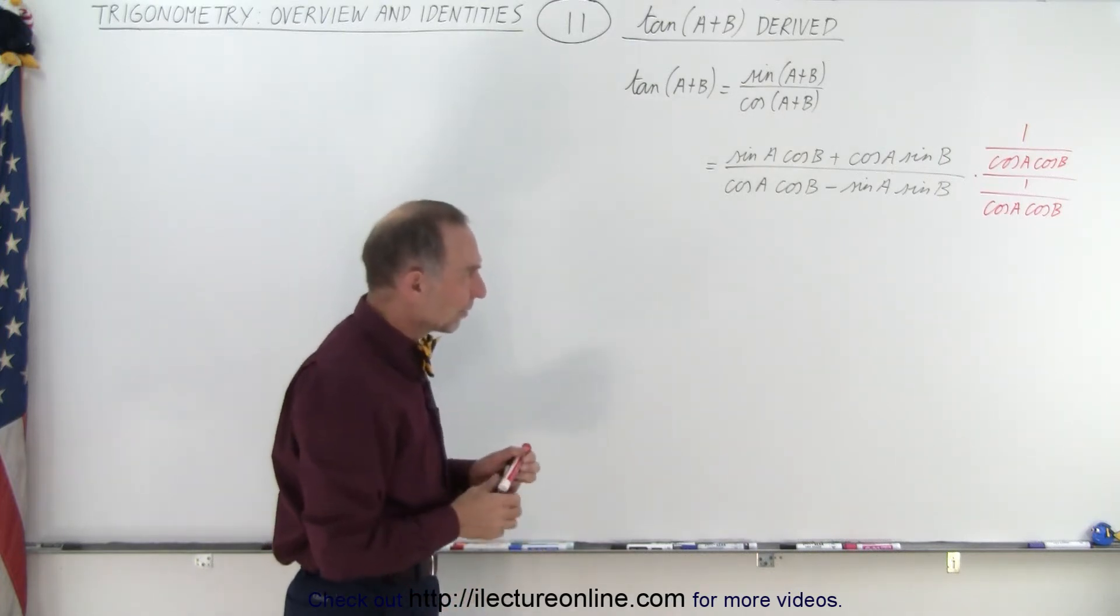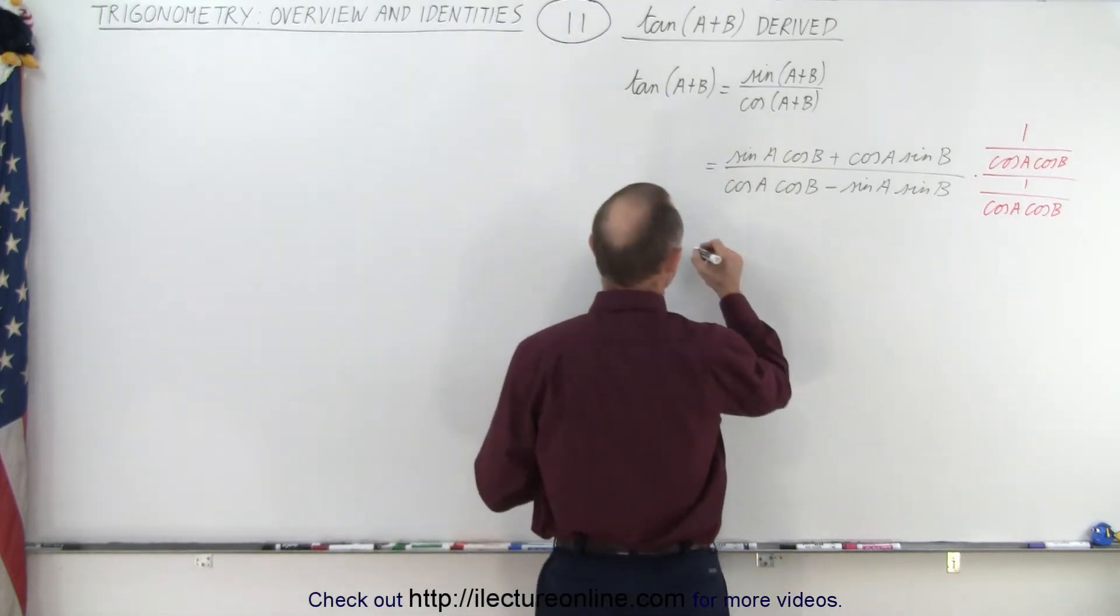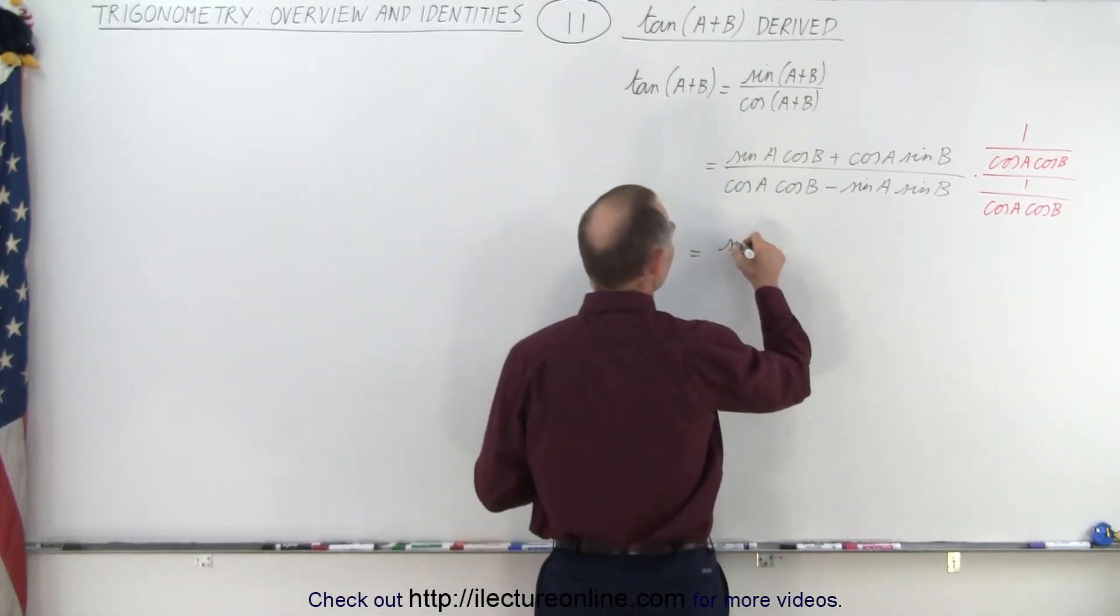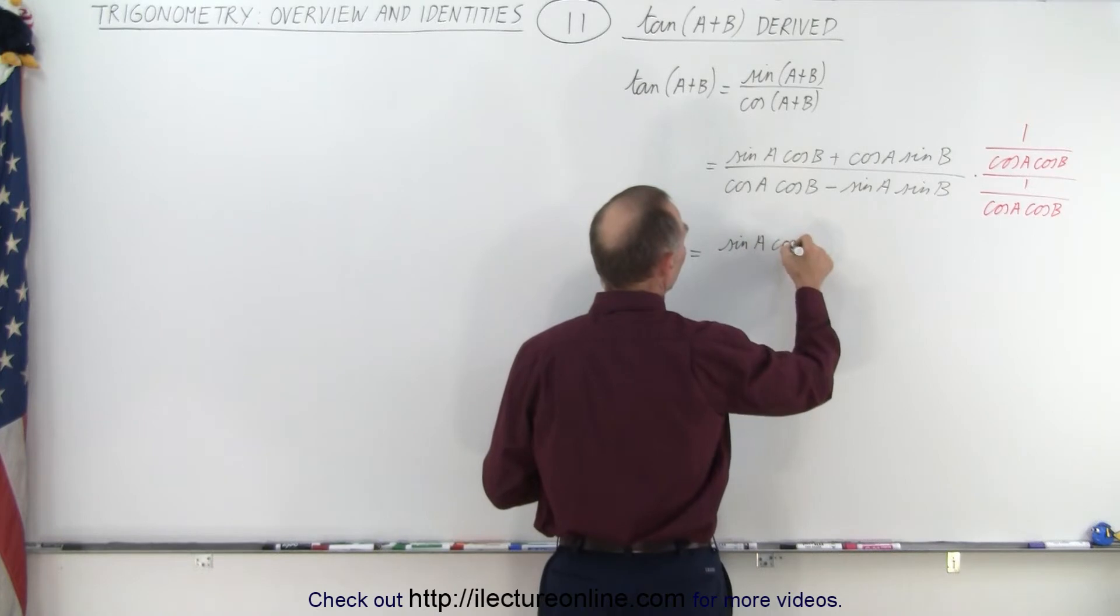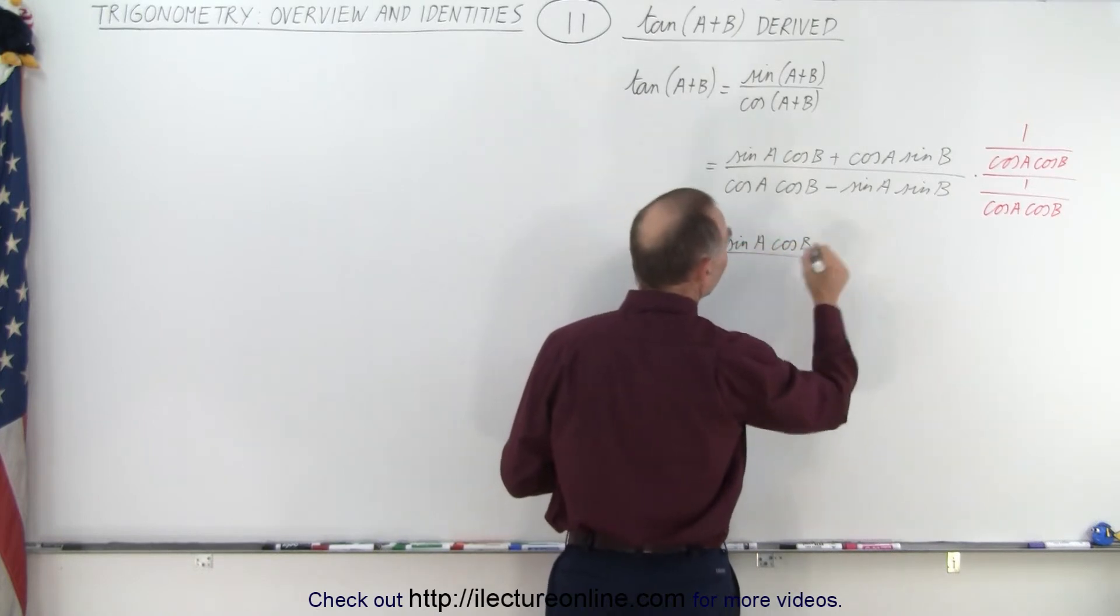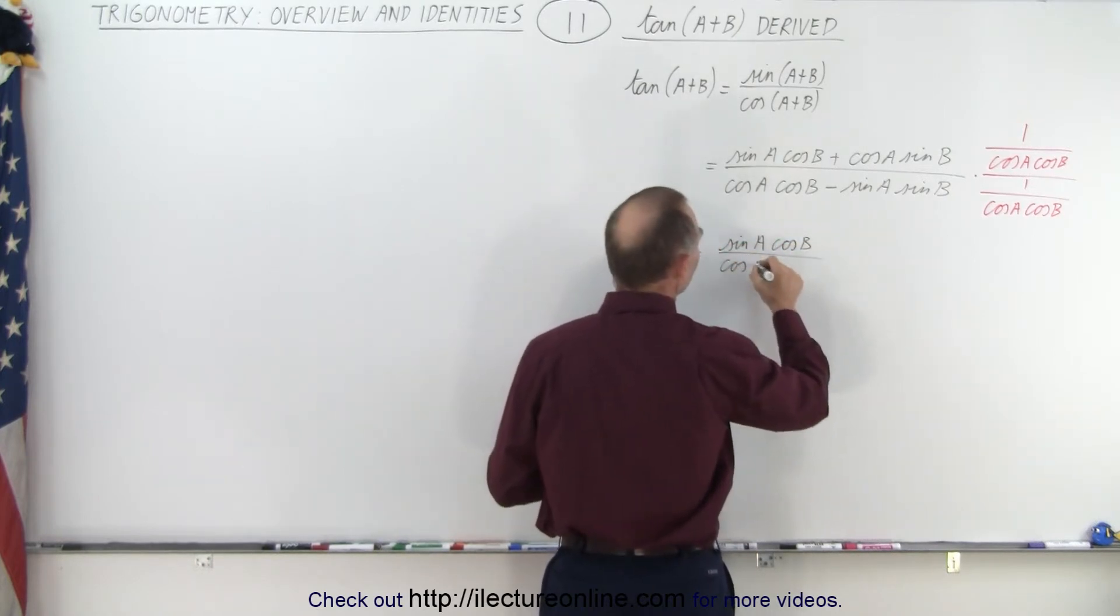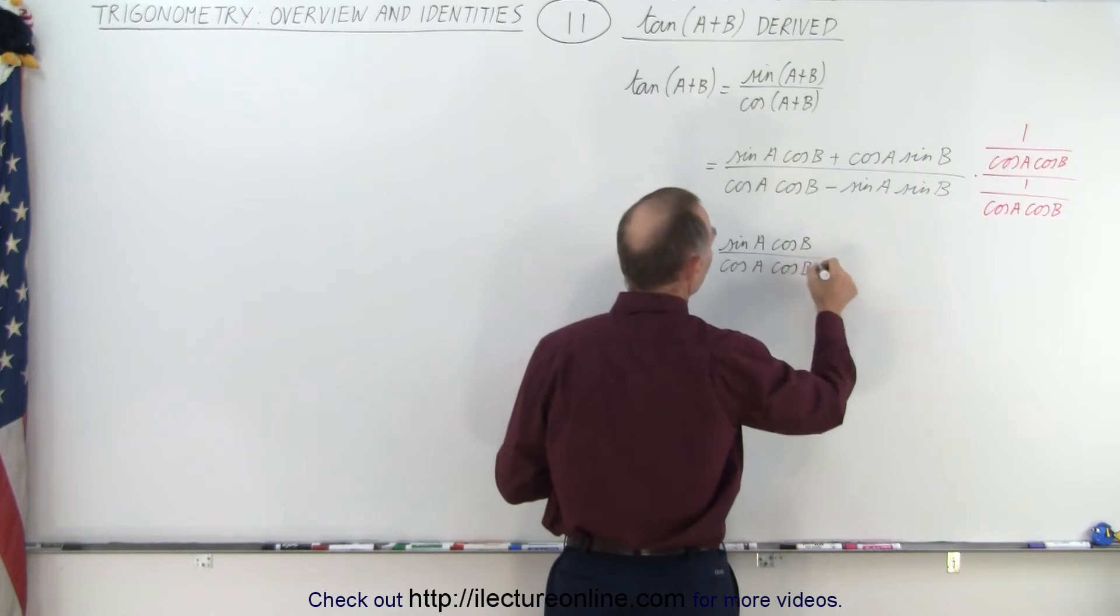All right, let's implement that and see what we get. So this then gives us in the numerator the sine of A times the cosine of B divided by cosine A cosine B. Plus,